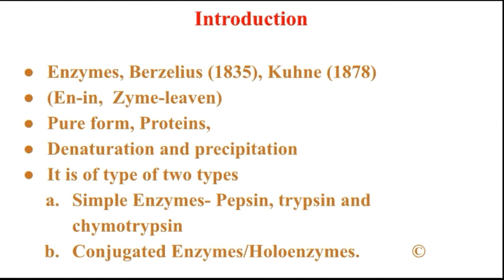But in 1878, Kühne first introduced the term 'enzyme,' which is derived from the Greek word — 'en' means 'in' and 'zyme' means 'leaven' — so enzyme literally means 'in leaven.'